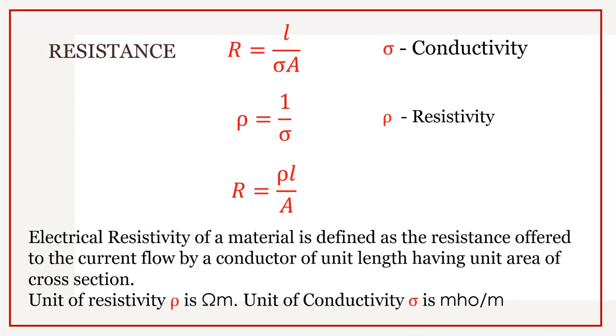Electrical resistivity of a material is defined as resistance offered to the current flow by a conductor of unit length having unit area of cross section. Unit of resistivity, rho is Ohm meter.